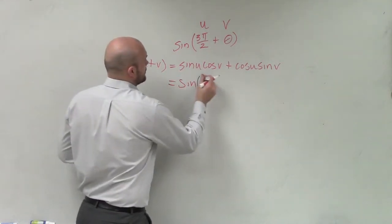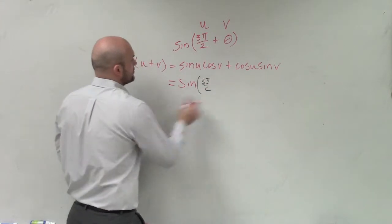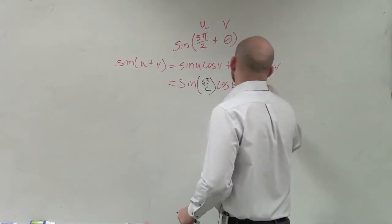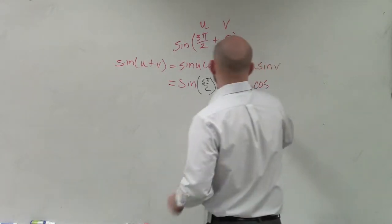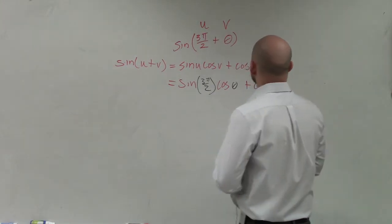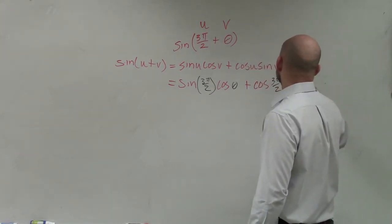So it's sine 3π over 2 times the cosine of θ plus cosine of 3π over 2 times the sine of θ.